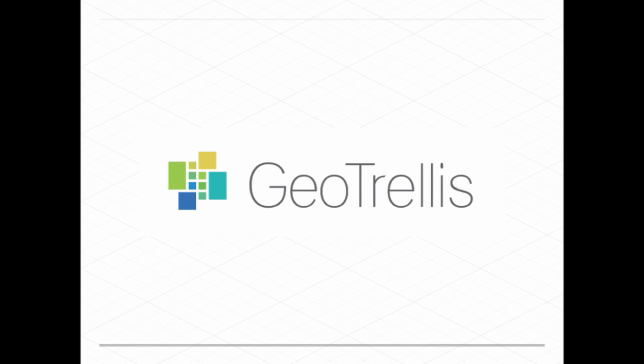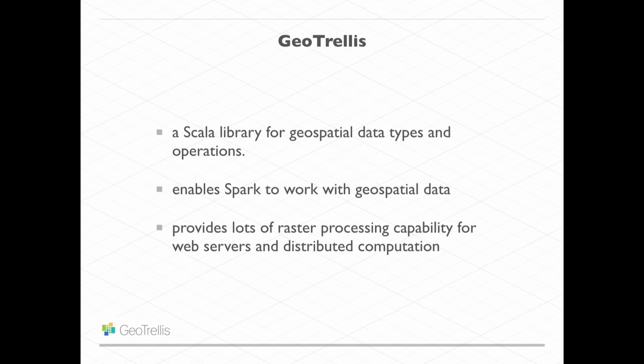GeoTrellis — now I get to talk about my favorite one because that's the one I maintain. GeoTrellis is a Scala library for doing geospatial operations and working with geospatial data types. If you're doing anything Scala and geospatial, it probably has functionality you'd be interested in. It enables Spark to work with geospatial data — working with Apache Spark over various backends to do geospatial processing, with a focus on raster data. We come from the raster world; we do have capabilities for vector data too, but we mainly focus on raster.